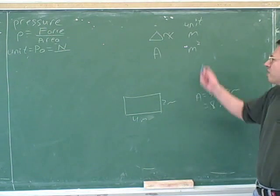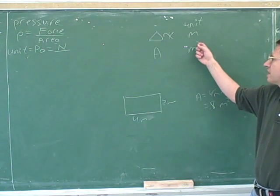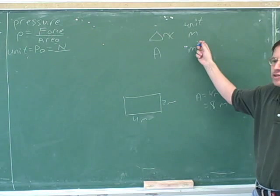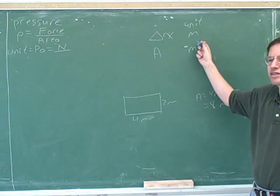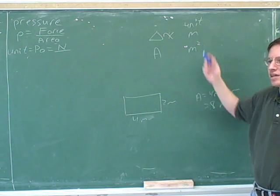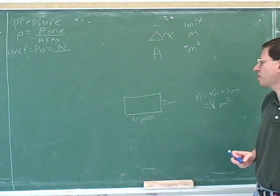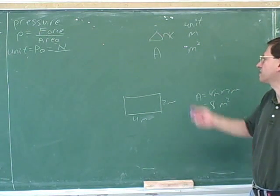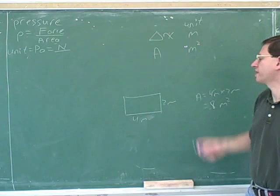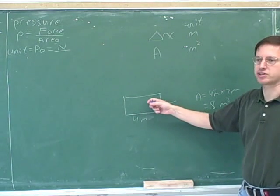In fact, that's why raising something to the second power is called squaring it — the reason is because this comes up when you try to find the area of a square.